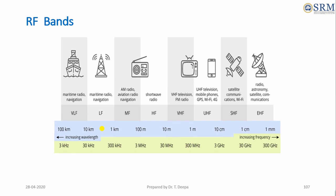This figure shows the radio frequency bands with their applications. All transmission systems are operated in the radio frequency spectrum range, from very low frequency to extremely high frequency, with corresponding wavelengths and applications. These include marine radio, analog radio, TV broadcasting, mobile networks, and satellite systems.